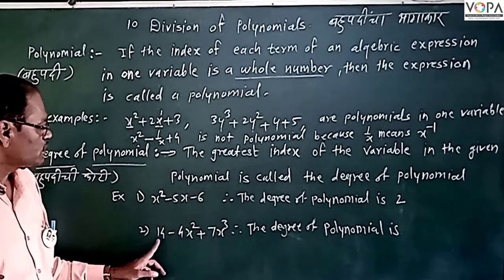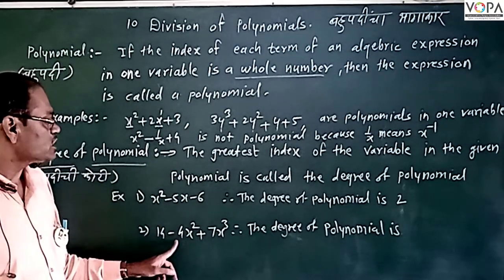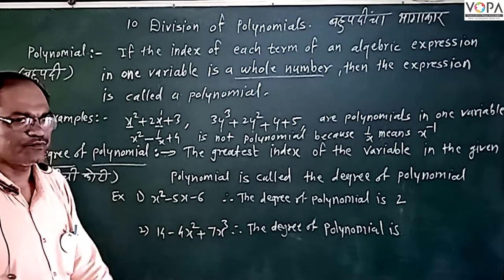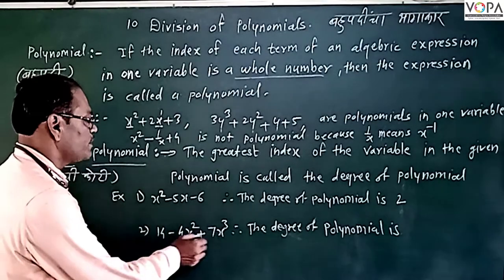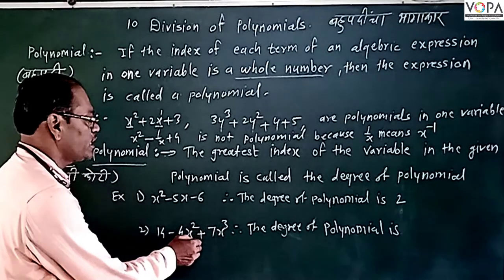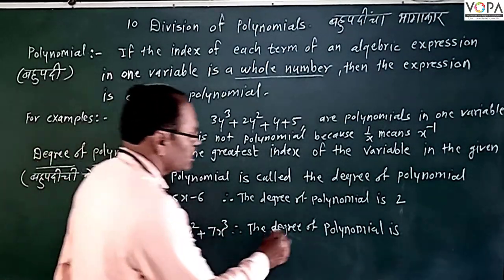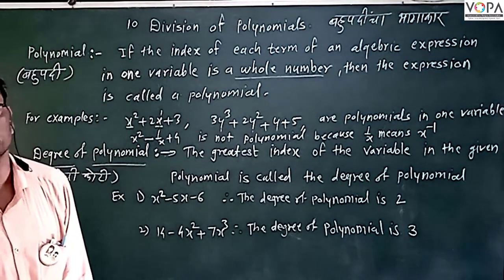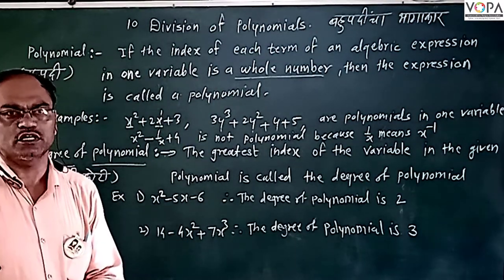Here's a second example: minus 4x square plus 7x cube. The variable is x and the greatest index of the variable is 3, therefore the degree of polynomial is 3.